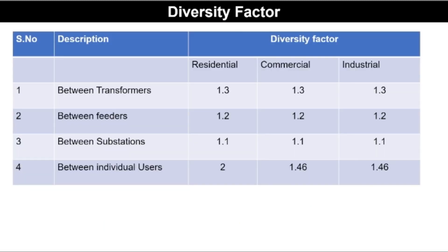The diversity factor of various buildings: between transformers, whether the area is residential, commercial, or industrial, the diversity factor is 1.3. Between feeders, whether residential, commercial, or industrial, it is 1.2. At the subsidiary substation level it is 1.1. Between individual users, it is 2.0 for residential, 1.46 for commercial, and 1.46 for industrial cases.